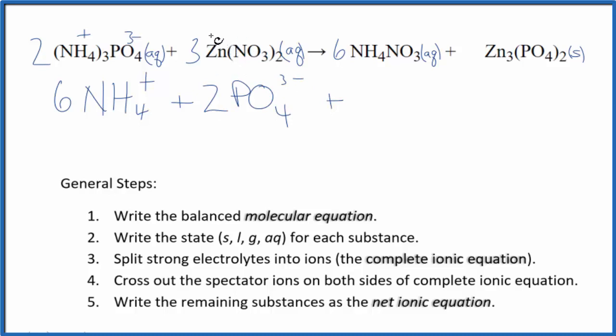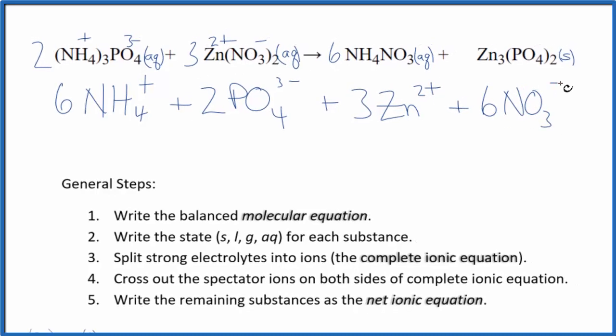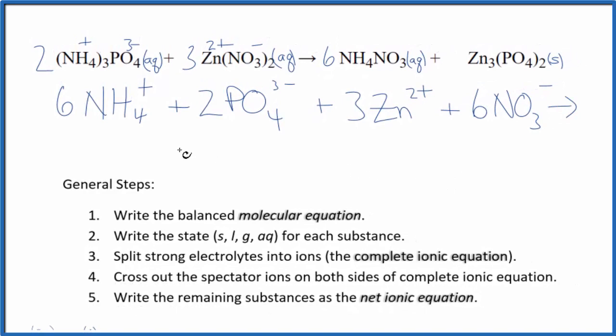Plus 2 of the phosphate ions. Then zinc is a transition metal, but it's always 2 plus. And the nitrate ion is always 1 minus. So we have 3 zinc ions and 3 times the 2 of these nitrate ions. So we have 6 nitrate ions. And those are the reactants in our net ionic equation.